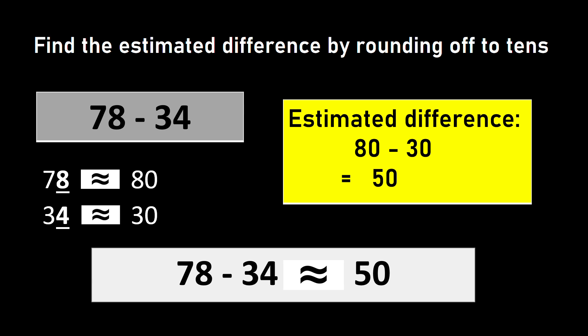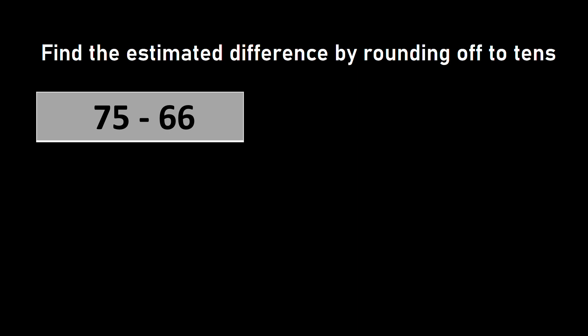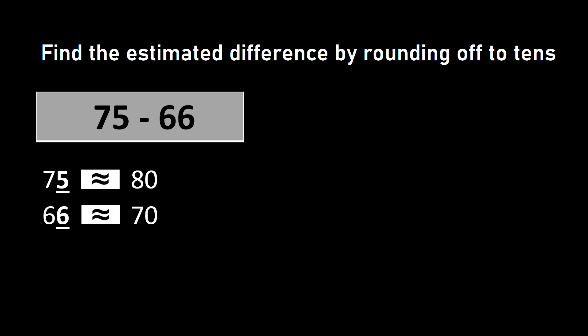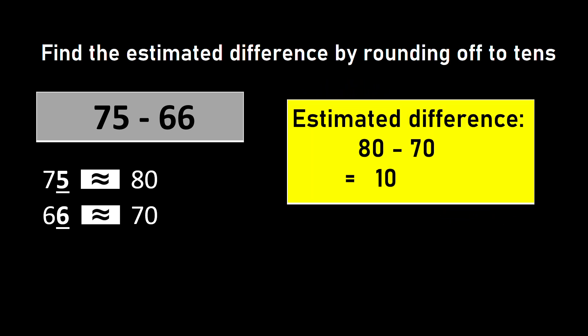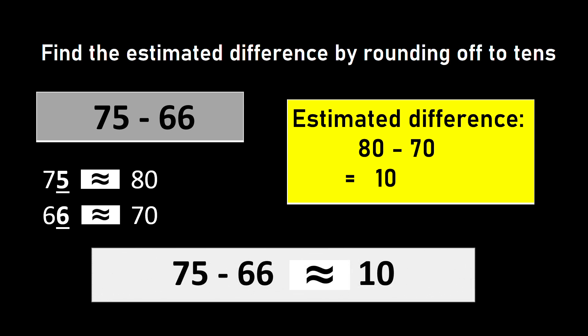This is how to find the estimated difference between two-digit numbers. Now let us look at one more example of a two-digit number. I have 75 minus 66. In 75, I have 5 in ones place, so it will be rounded up — 75 is approximately equal to 80. And 66 will be rounded up as 70. So the estimated difference will be 80 minus 70, which is equal to 10. Hence I say 75 minus 66 is approximately equal to 10.